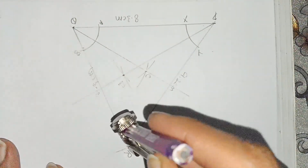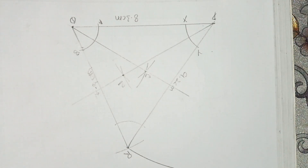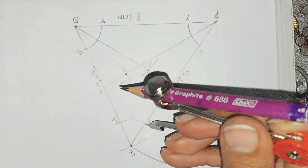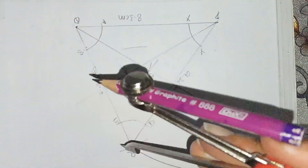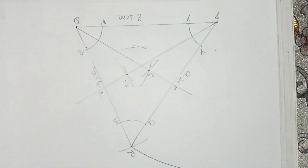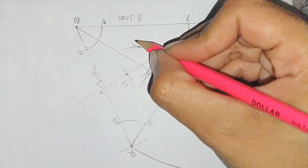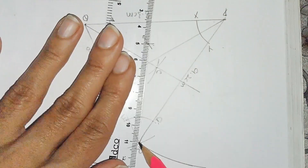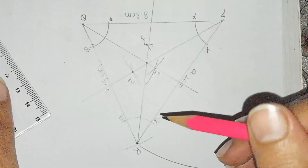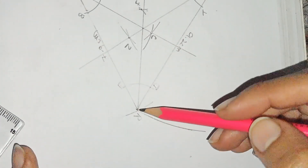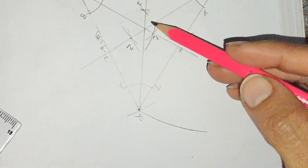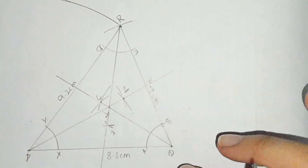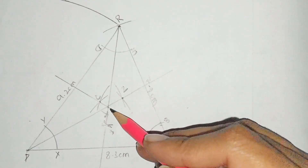Now make the angle bisector of angle R: draw arcs cutting the sides at D and E, then place the compass at D then E — they bisect at point F. Join F and R — this is the angle bisector of angle R. All three angle bisectors pass through the same point, and we label this point T. This point T is equidistant from lines PQ, PR and QR.